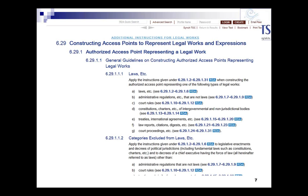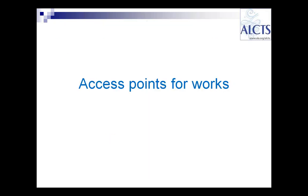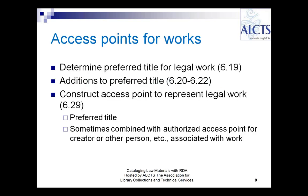This first arrangement gives you links to the specific rules for the different types. Now we'll talk in a little more detail about these access points for works. The first thing to do is determine your preferred title for a legal work. Sometimes you have additions to your preferred title — these can be things such as a date or other distinguishing characteristics, meaning protocols, or a signatory to a treaty. When you construct your access points, you build on that preferred title and sometimes combine it with an access point for a creator or another person or corporate body associated with the work.